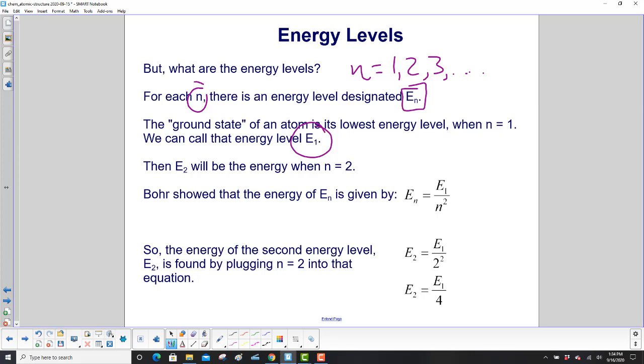Bohr showed that the energy of an energy level, E sub n, is equal to E1, right? That's the lowest energy level, divided by n squared. So the energy of the second energy level, E2, is found by plugging n equal 2 into the equation and finding out that the energy level, E sub 2, is equal to E sub 1 divided by 4.